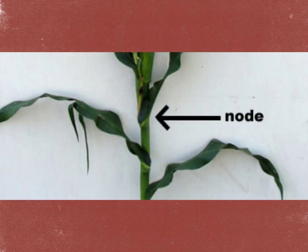A node is a place on the stem where growth occurs. Leaves, roots, ears, and tassels form from nodes.